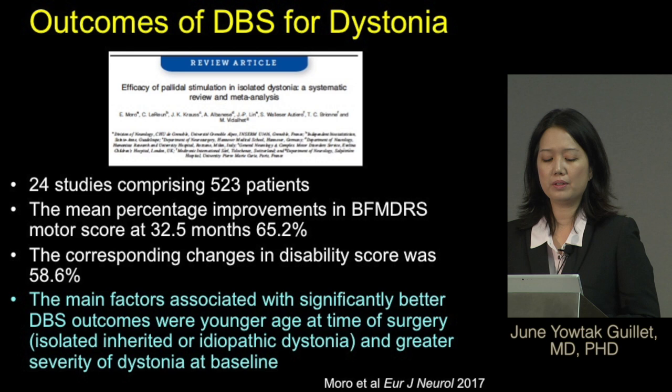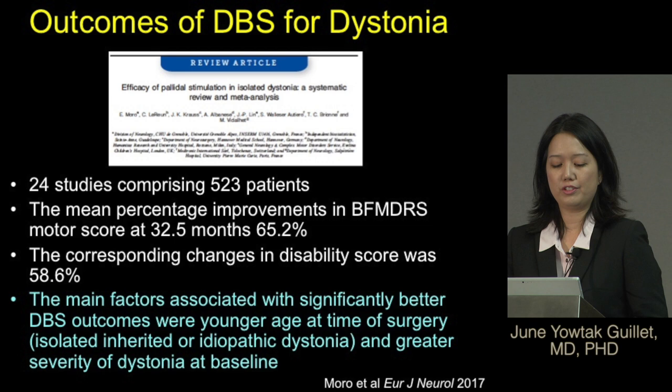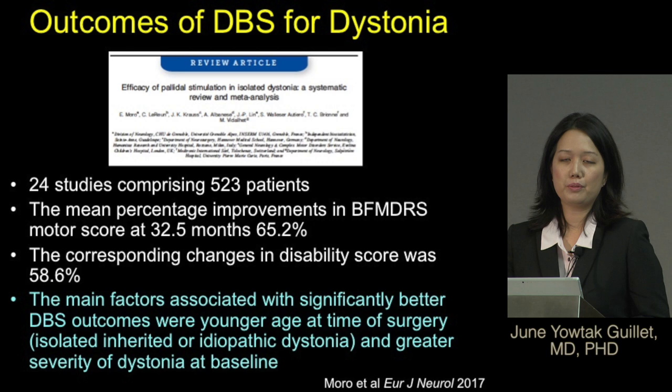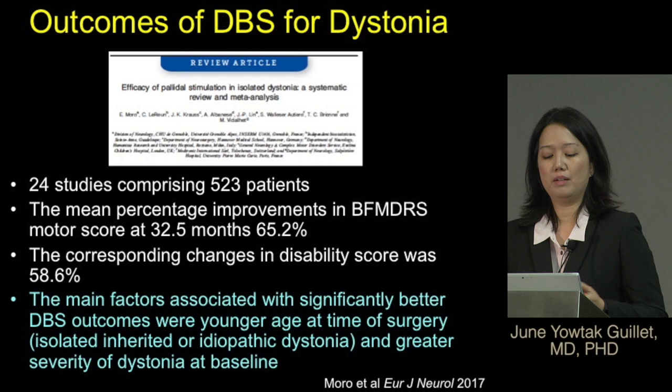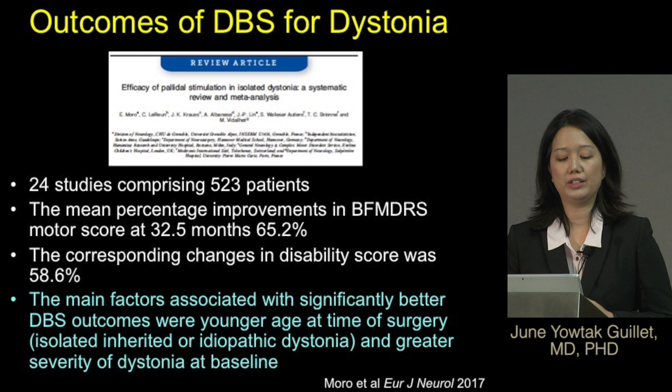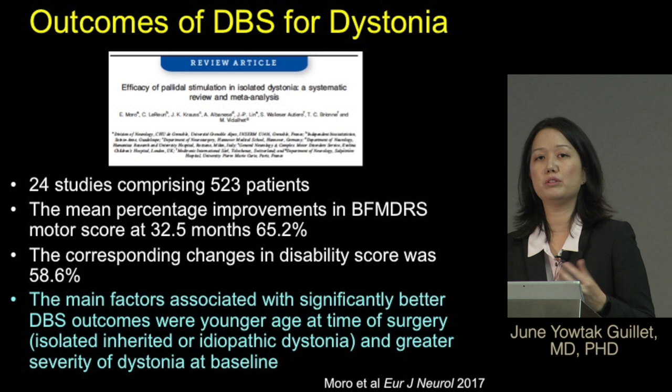A meta-analysis of 523 patients who underwent DBS for dystonia found that around 32 months after surgery there was a 65 percent improvement in motor symptoms. The factors associated with better DBS outcomes were younger age at time of surgery, idiopathic dystonia, and greater severity of dystonia at baseline — meaning the worse your symptoms were, the more room for improvement.